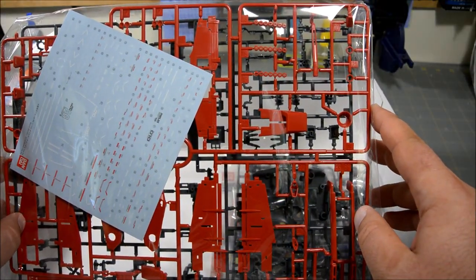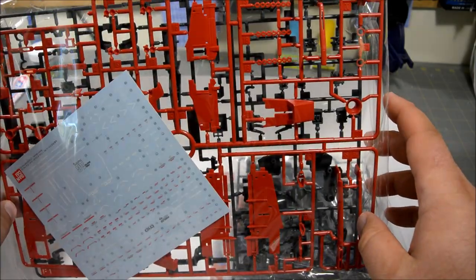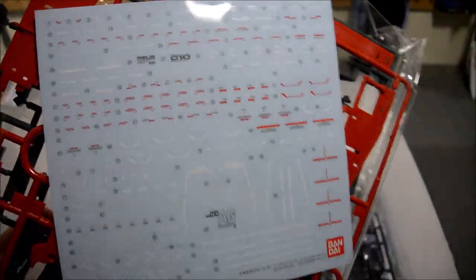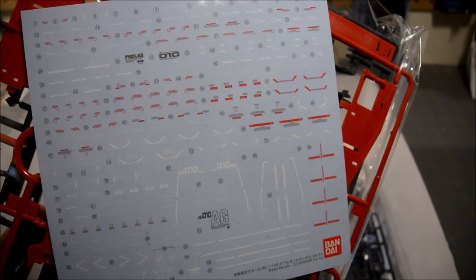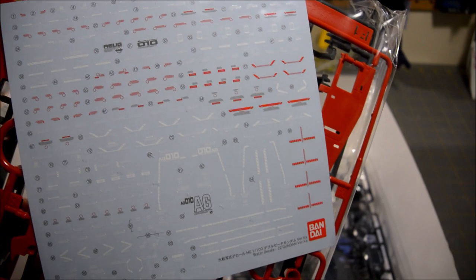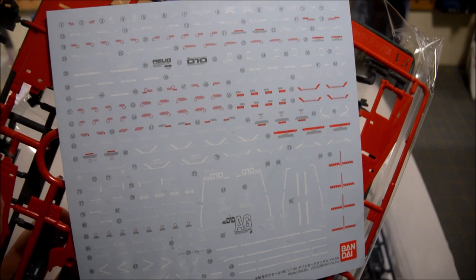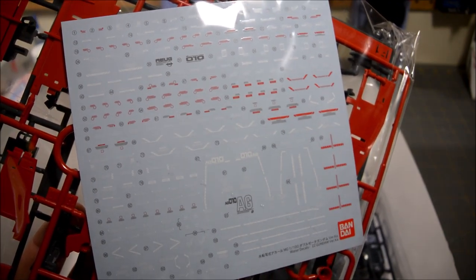Another runner of red parts, looks like a partial copy of the last red runner but adding some more stuff to it. Also, we've got our water slide decals here for all our caution markings. Not a whole lot of big extravagant detail decals, mostly just caution markings and then some stripes and stuff. So sort of minimalistic with the decals on this kit.